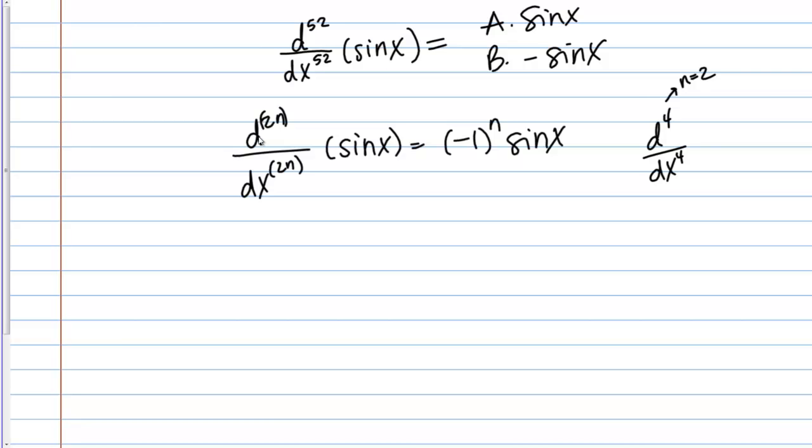How do I actually apply this formula? Let's use it on our problem. We have the 52nd order derivative. Basically all you have to do is figure out what N should be. This is an even order derivative of sine, so I know that my answer is going to be either positive sine or negative sine. I can use this formula to help me figure out which one.